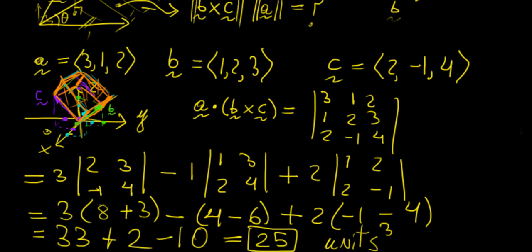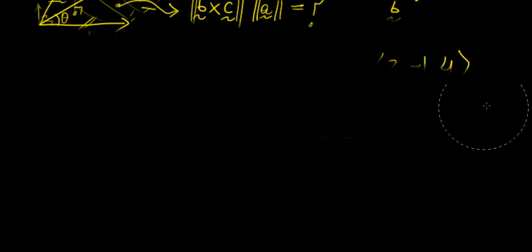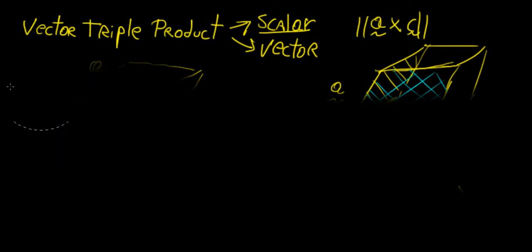That's a really neat result. We just found the volume of this 3D shape — which has angles that might be hard to calculate — in just a few lines of calculation, without needing simple trigonometry. This shows one of the many applications of vectors in geometry. There isn't much more to the scalar triple product, so now I want to introduce the vector triple product, which is slightly different but has some really nice properties.